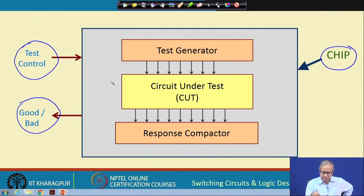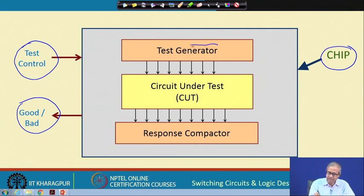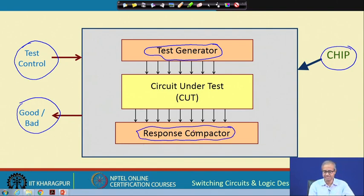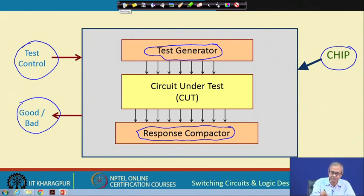This is the very high-level schematic of a chip where we have two additional pins — one is called test control and the other reports good or bad: the chip will report to the outside world whether it is good or bad. Inside the chip, in addition to the circuit you want to test, you will have some test generator circuit and also some response evaluator — call it a response compactor circuit. We will be looking into the detail of this test generator and response compactor in the next few slides.